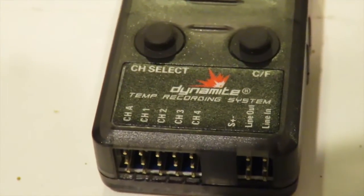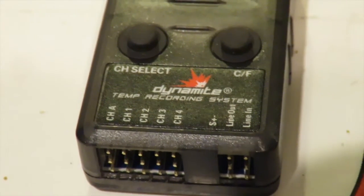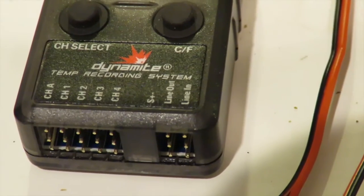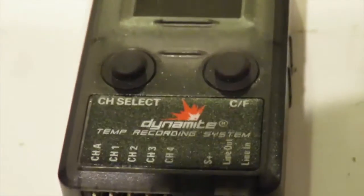We've got channels A and then channels 1, 2, 3, 4 on there. We've got a line out and a line in. I'm assuming the line in is for power, but I'm going to read the instructions before doing that.